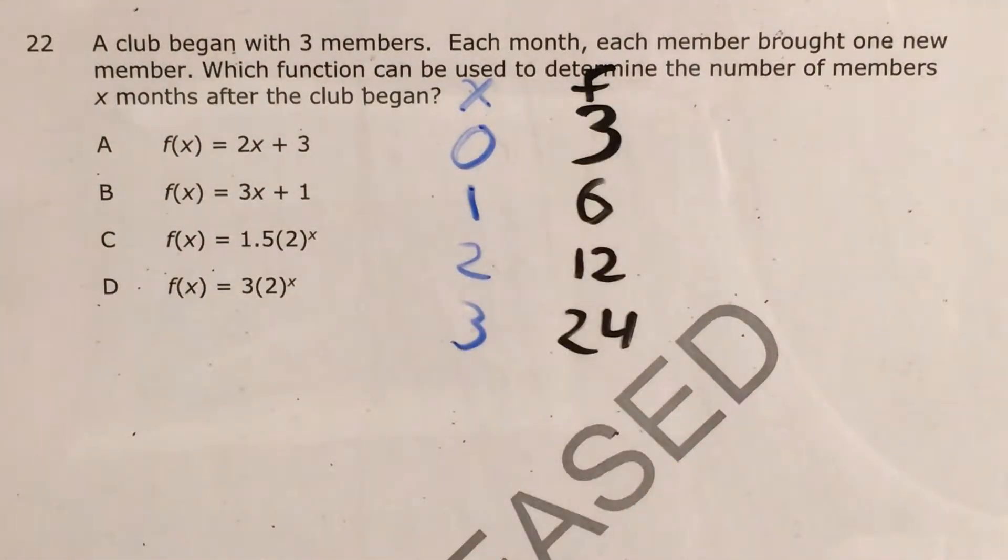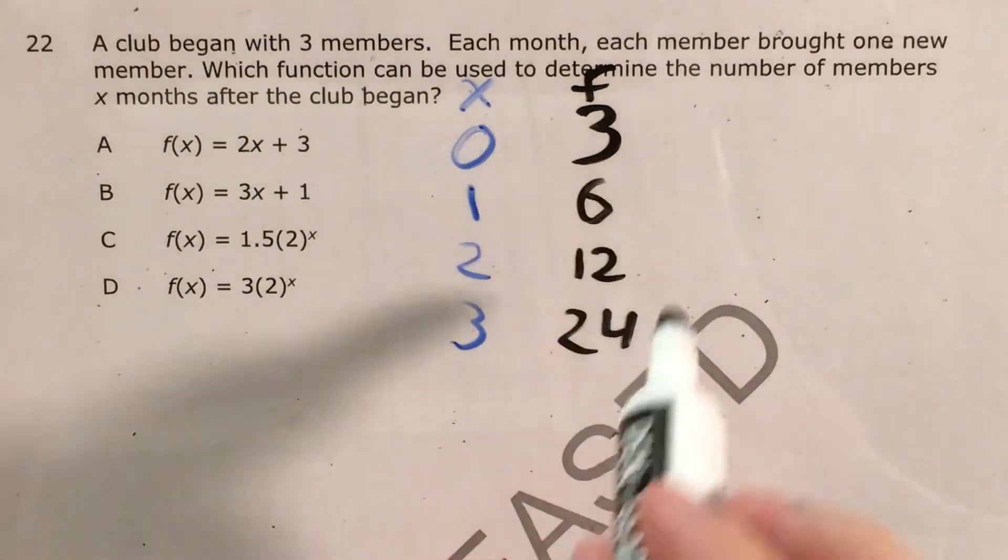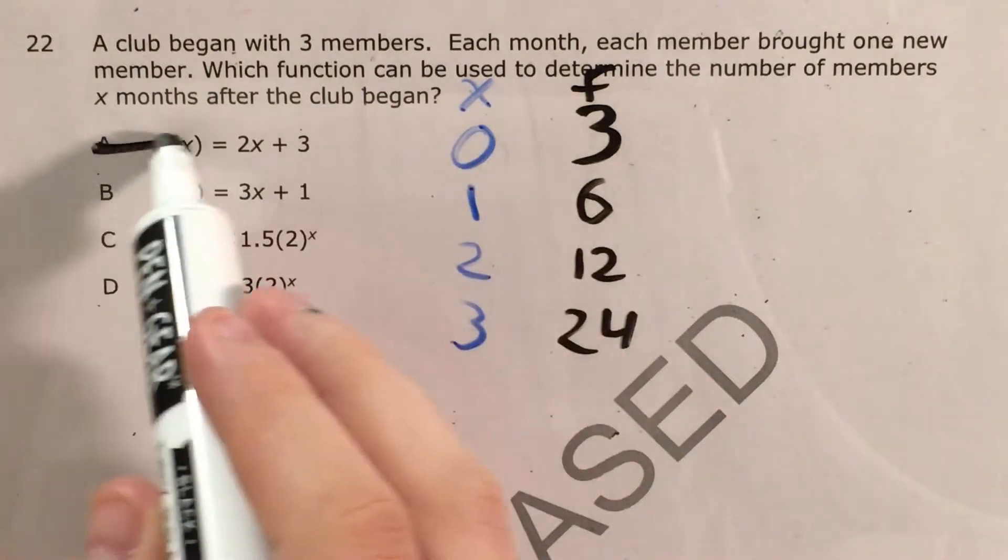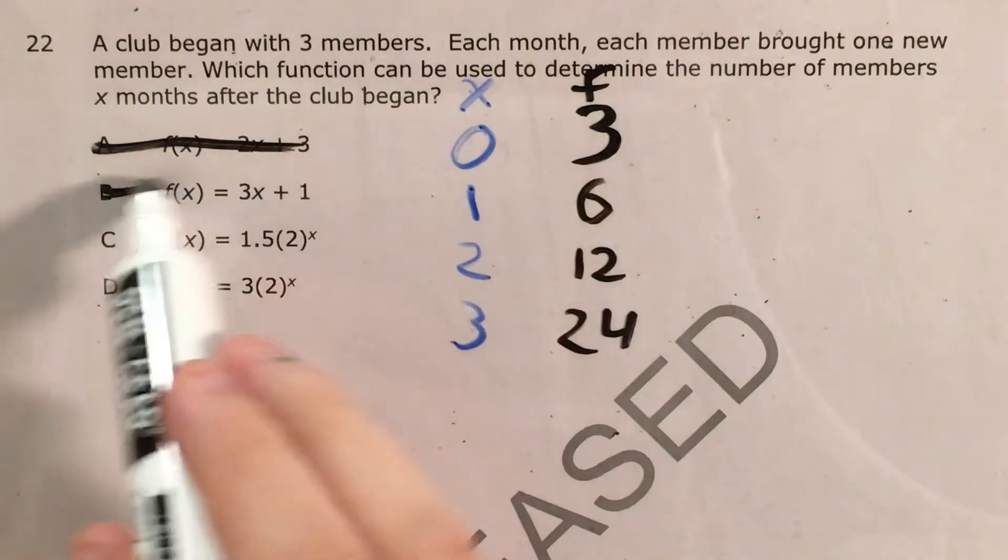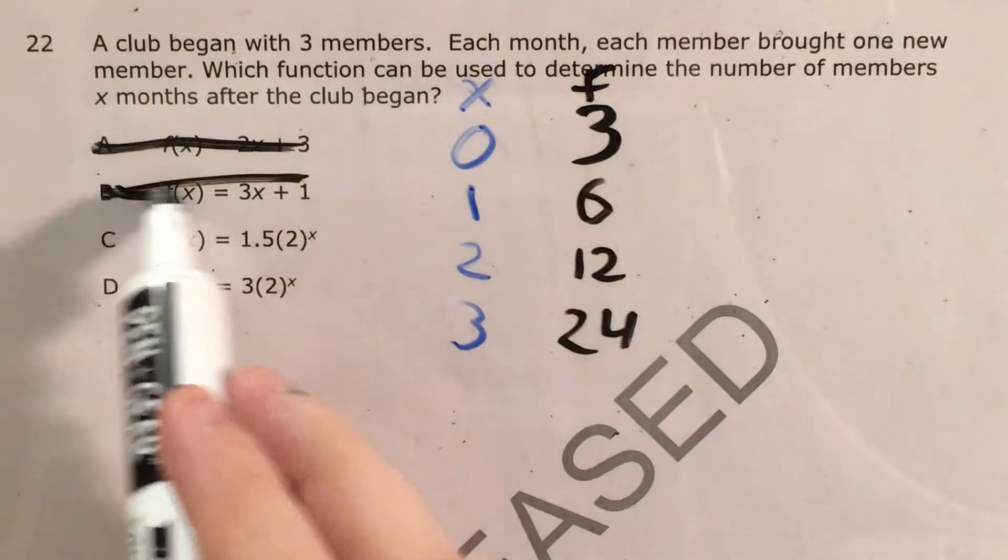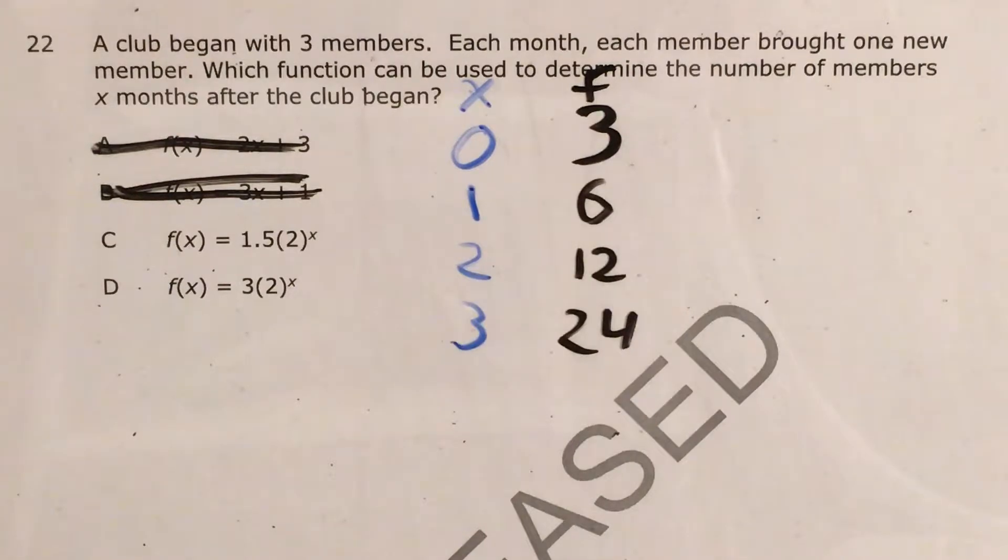And it doesn't look like we're adding the same thing here. We're adding three, adding six, adding twelve. So both of our linear equation choices, our linear function choices, are out.